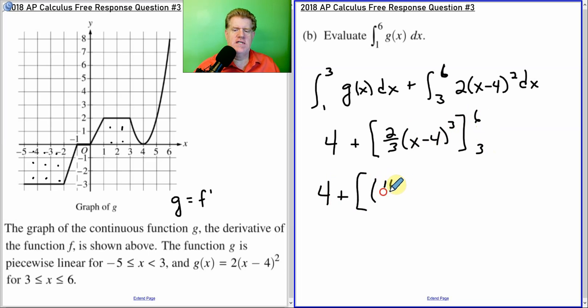Subtract the 3. 3 minus 4 is negative 1. Negative 1 cubed is negative 1. So, we have negative 2 thirds. Well, isn't that nice? Because that becomes 18 thirds, which we also know as 6. So, this equals 10.